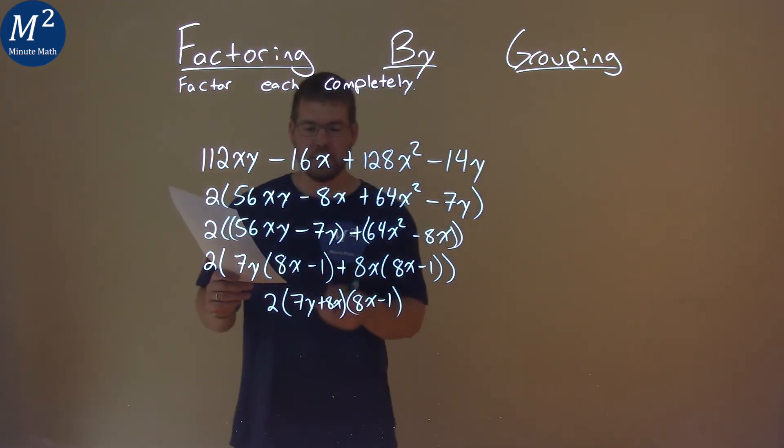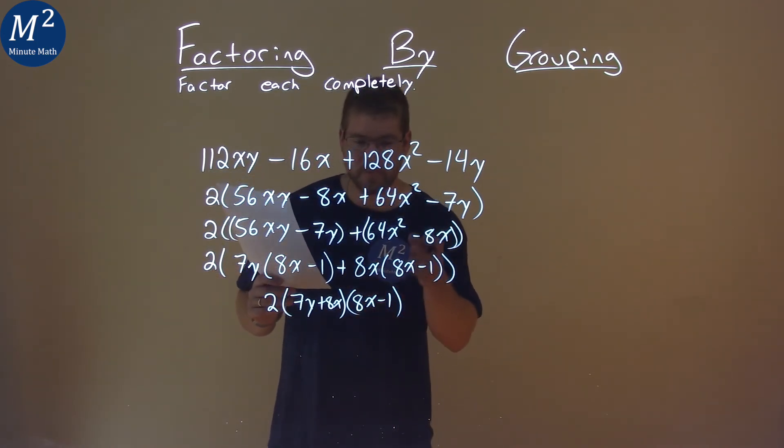And so our final answer here is 2 times 7y plus 8x times 8x minus 1.